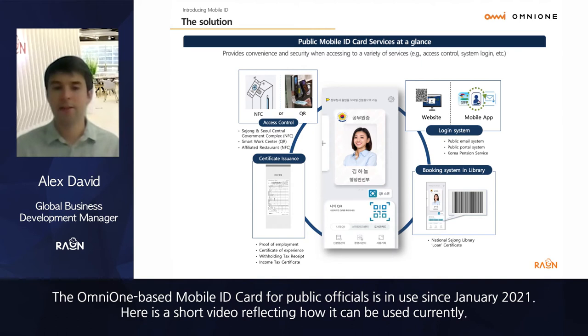The OmniOne-based mobile ID card for public officials has been in use since January 2021.